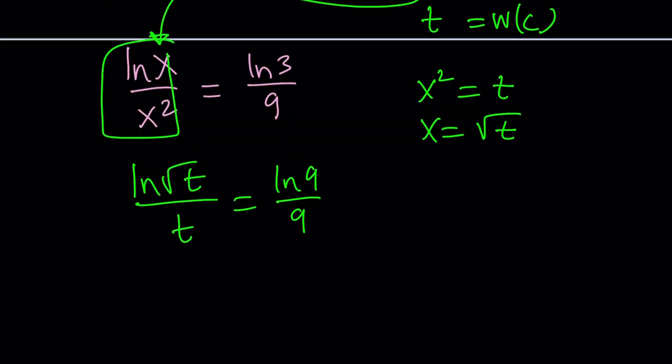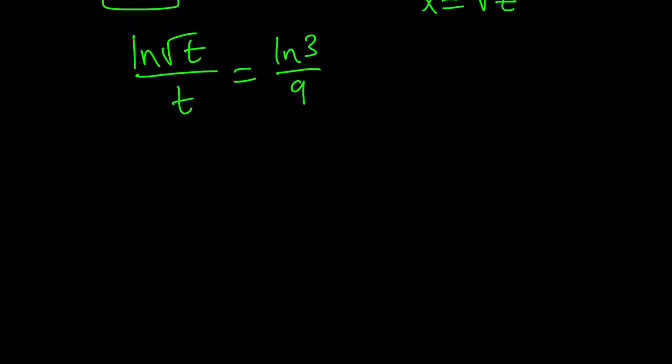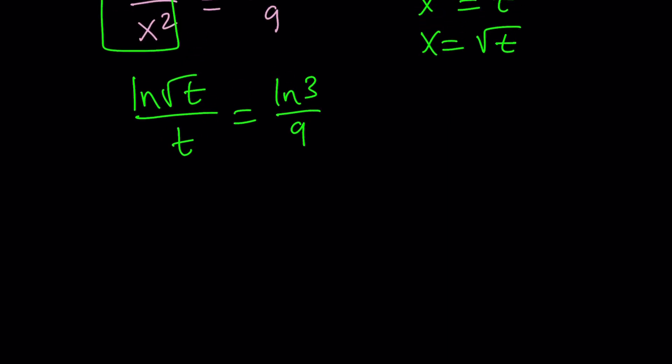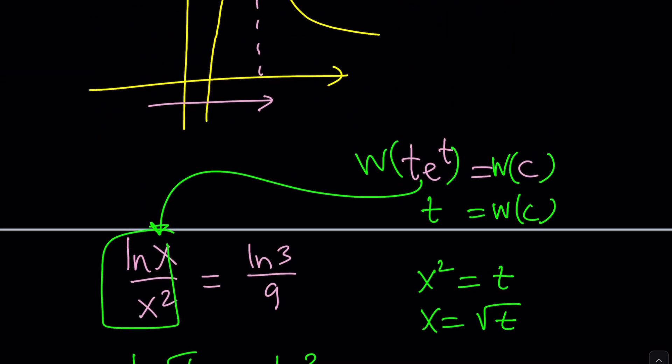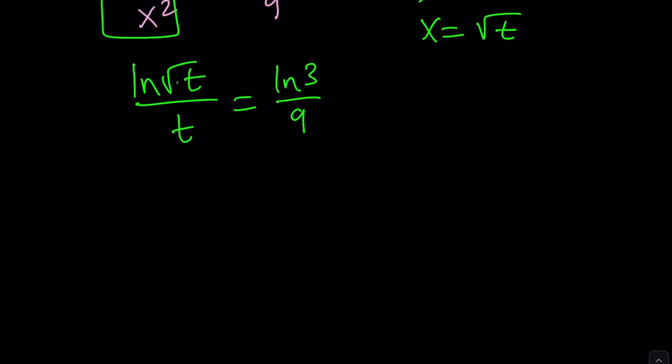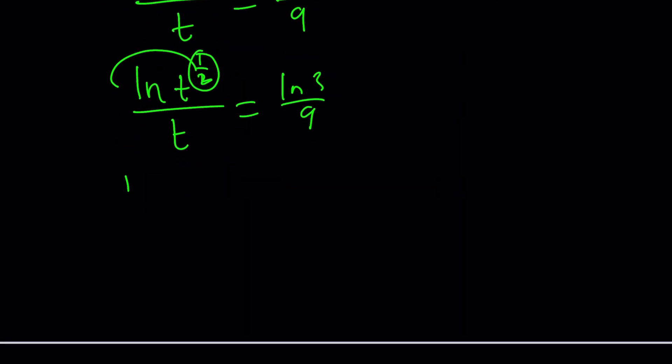Oops. I magically or mathematically turned the 9 into a 3. Not yet. And then, we're going to write this as follows. The goal was to get something like t*e^t, right? We're going to get there. So, square root of t is t^(1/2). And now, what I can do now is bring the 1/2 to the front, right? And when I do that, I get (1/2)ln(t)/t = ln(3)/9. But then, I can eliminate the 1/2 by multiplying both sides by 2. And guess what? That does the trick.